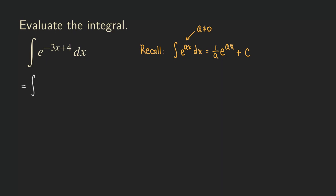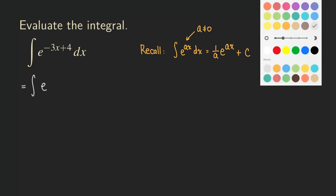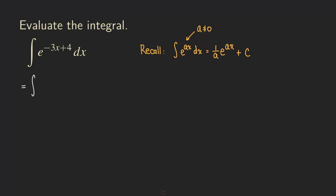We can actually write it as e to the negative three x, and then times e to the fourth. And then the dx.